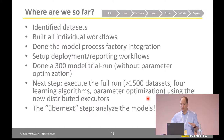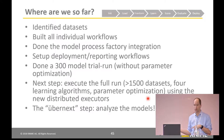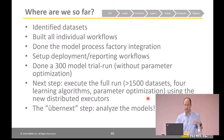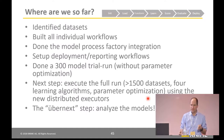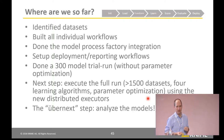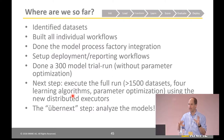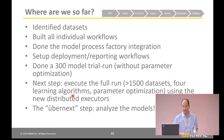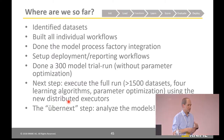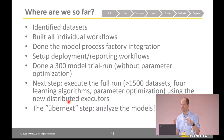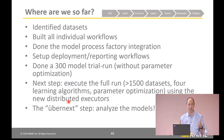So that was all theory — let me tell you where we really are so far. We've identified all the datasets, built all of those individual workflows, and tied them all together into the model process factory. We've set up the deployment and reporting workflows. We've done a 300-model trial run without the parameter optimization. We haven't actually run all 1,500 models with all 20 different possibilities in the parameter optimization — for that we're waiting for the distributed executors. Running that on one server would probably take about a week or a week and a half; I'd much rather run that across a bunch of servers and get the results more quickly. The step after that is to analyze the models — as a chemistry data geek, I'm really interested in seeing which models do well with which types of datasets, because I think there's a lot we can learn about our methods from this very large collection of real-world datasets.